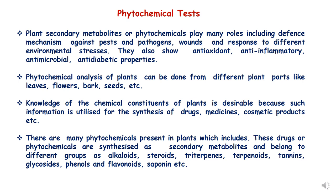We need knowledge of phytochemicals because the information is used for the synthesis of modern drugs, medicines, and cosmetic products. The kinds of phytochemicals present in plants include various groups: alkaloids, steroids, triterpenes, terpenoids, tannins, glycosides, phenols, flavonoids, saponins, etc. We have already discussed alkaloids, tannins, saponins, and flavonoids in previous lectures. Now let us discuss sterols and triterpenes.